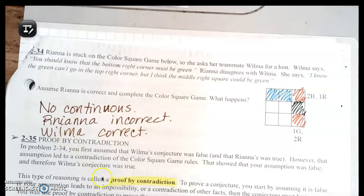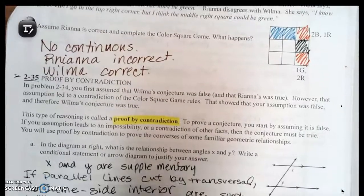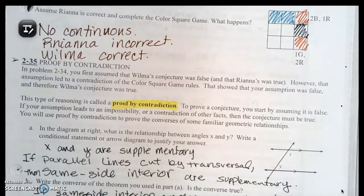This is something called proof by contradiction. In problem 34 you first assume that Wilma's conjecture was false and that Rihanna's was true. However, that assumption led to a contradiction of the color square game rules that showed your assumption was false, and therefore Wilma's conjecture was true. This type of reasoning is called a proof by contradiction. If you have a highlighter, highlight it. To prove a conjecture, you start by assuming it is false. If your assumption leads to an impossibility or a contradiction of other facts, then the conjecture must be true. You will use proof by contradiction to prove the converses of some familiar geometric relationships.